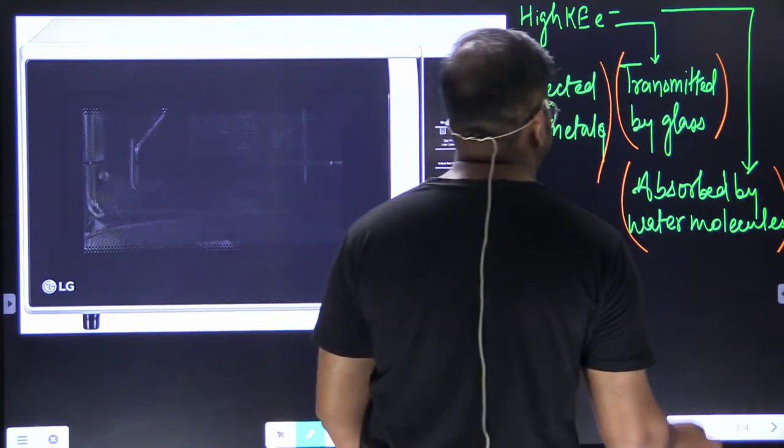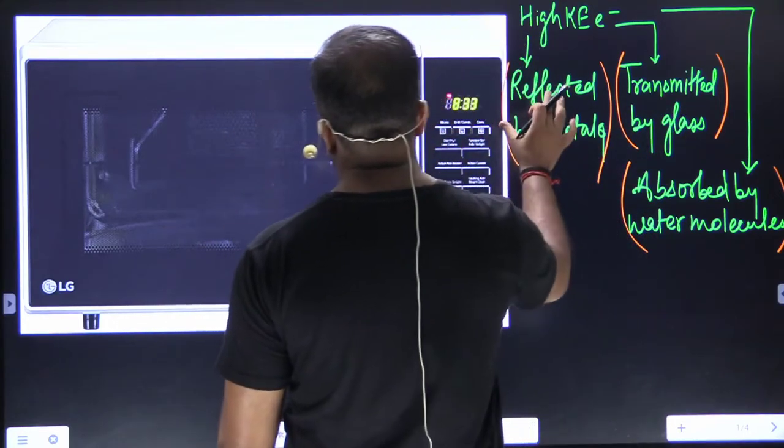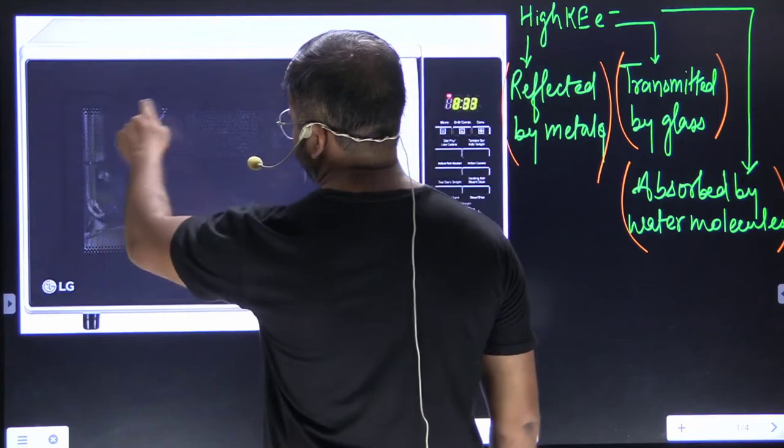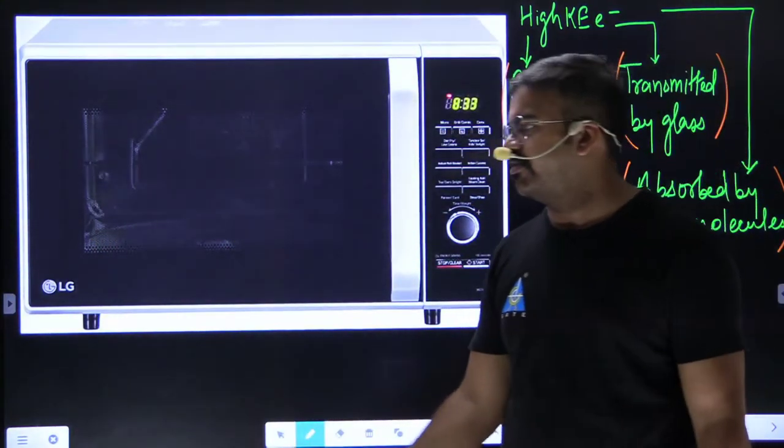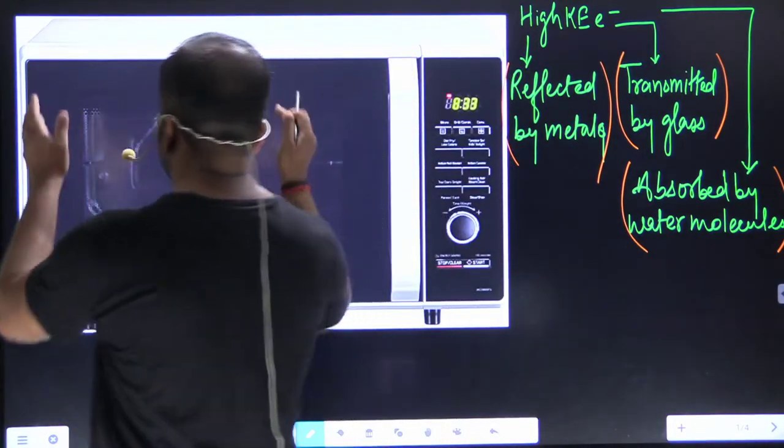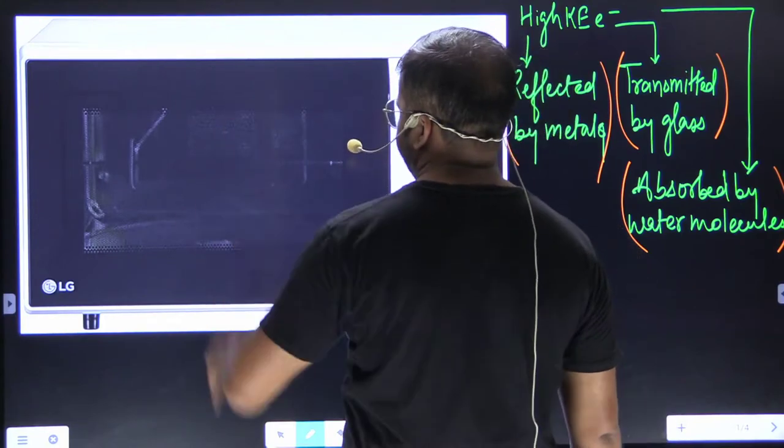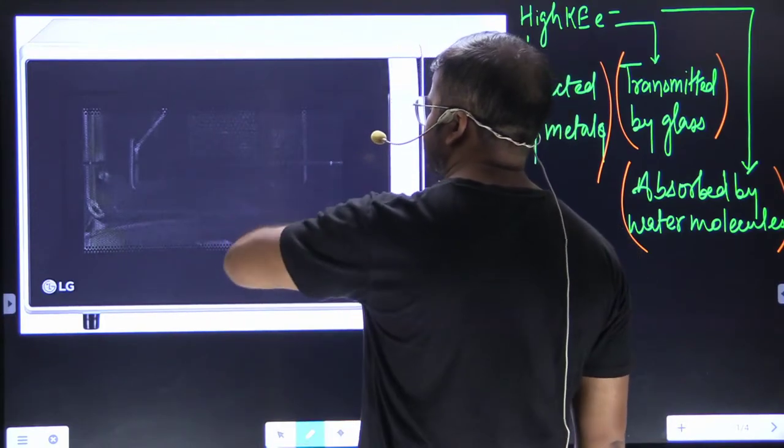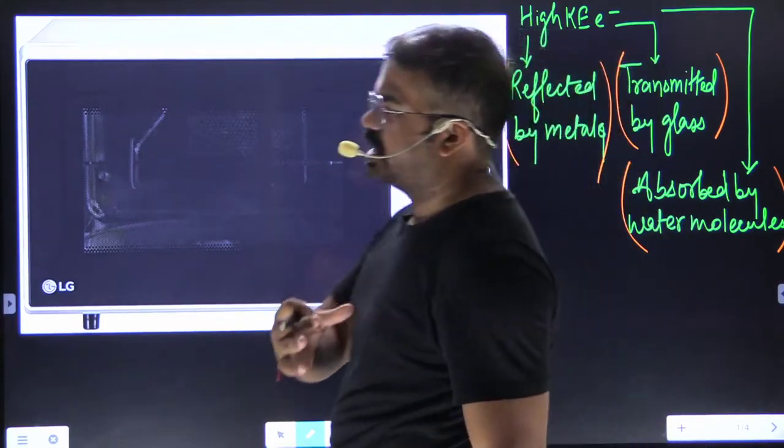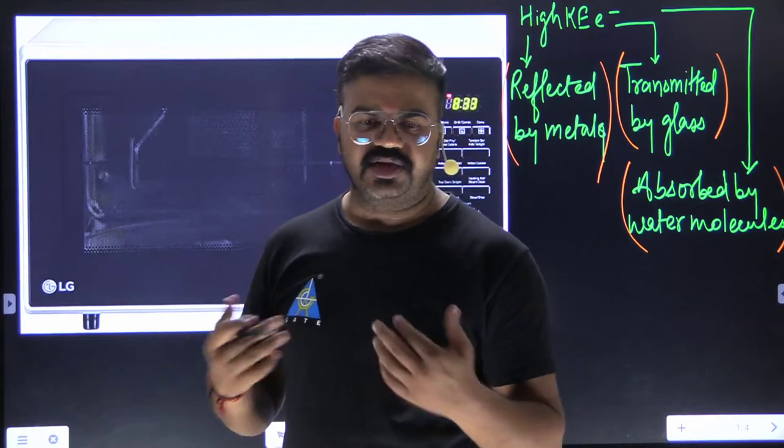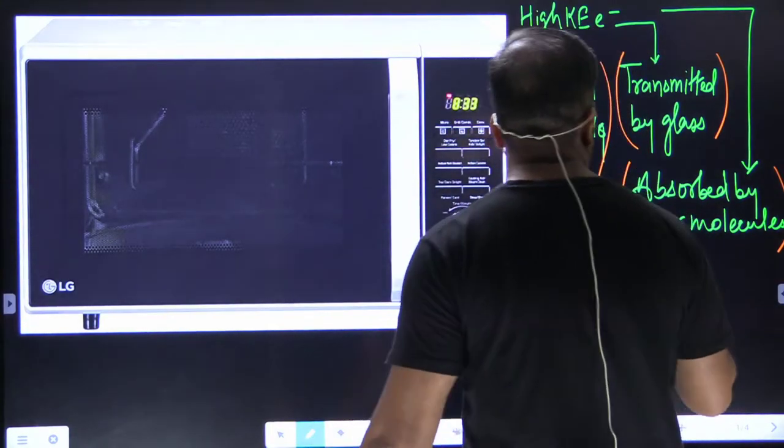They are reflected by metals, transmitted by glass, and absorbed by water molecules. That is why the internal side is made up of metals. As you can see, the inner box is made up of metals. Glass is there to check what is happening inside, but it is given a black coating so that the electrons are not transmitted out. If they are transmitted out, there will be a loss, and we don't want loss to happen.